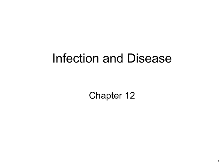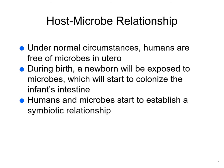This chapter is on infection and disease. We want to talk about the host-microbe relationship. Under normal circumstances, humans should not have any microbes in utero — the uterus should be sterile. During birth, the newborn is exposed to microbes in the birth canal, and those microbes will start to colonize the intestines. Then from milk, air, and life, they'll get more and more microbes.